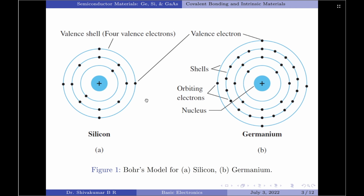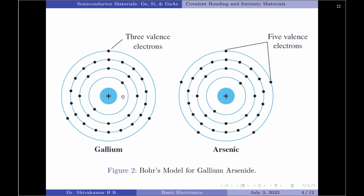We note from figure A here that silicon has 14 orbiting electrons and germanium has 32 orbiting electrons. Similarly, gallium has 31 orbiting electrons and arsenic has 33 orbiting electrons.